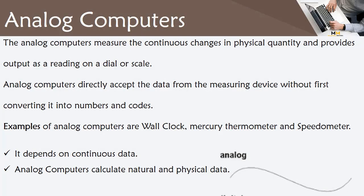Analog Computers mirror the continuous changes in physical quantities and provide output as a reading on a dial or scale. They directly accept data from the measuring device without first converting it into numbers and codes. Most common examples of analog computers are the analog wall clock, mercury thermometer, and speedometer.